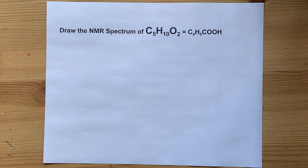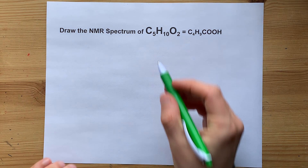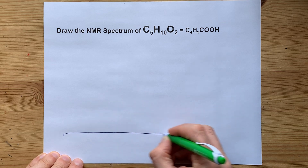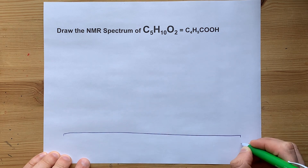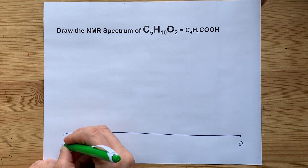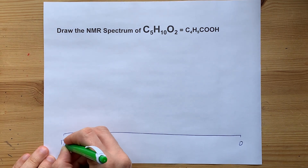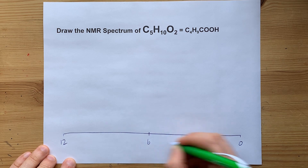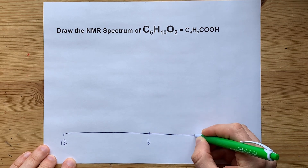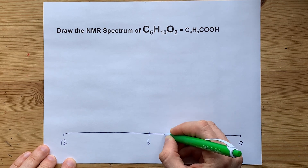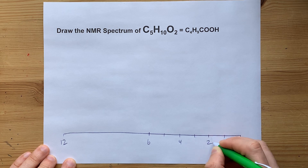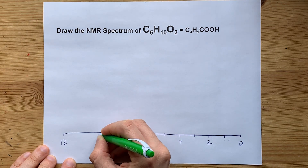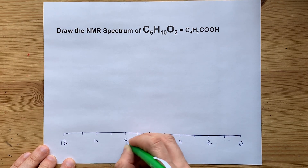The NMR of pentanoic acid. Let's start by giving ourselves the x-axis of 0 to 12. The halfway point is 6, and we mark off 1 through 12.